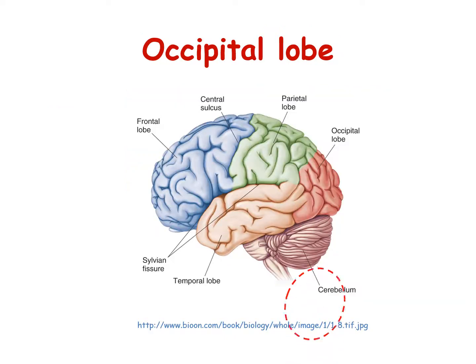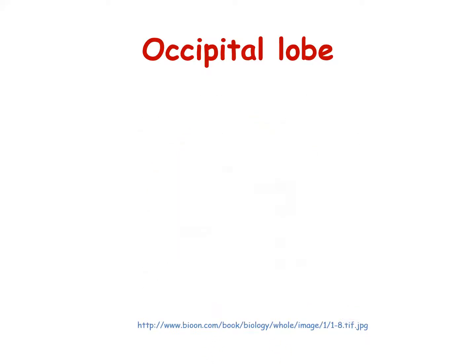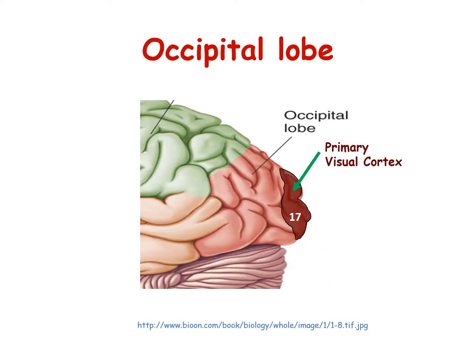The occipital lobe occupies the back (posterior) portion of the brain, separated by the calcarine sulcus from the parietal and temporal lobes. This lobe is concerned with visual processing and the primary visual sensory cortex. Area 17 and higher order association areas (areas 18 and 19) are located here.